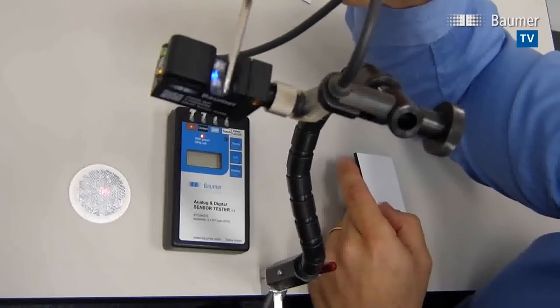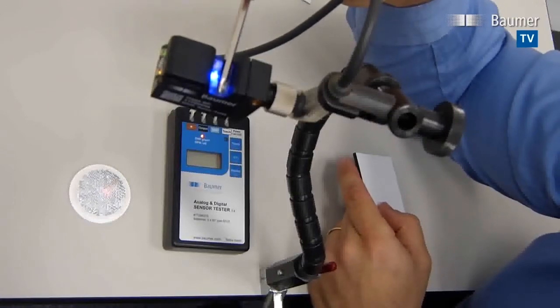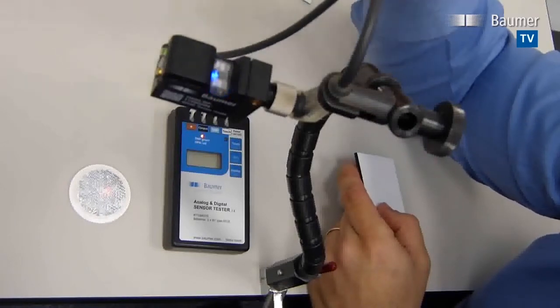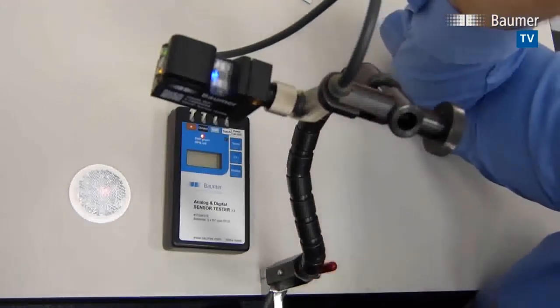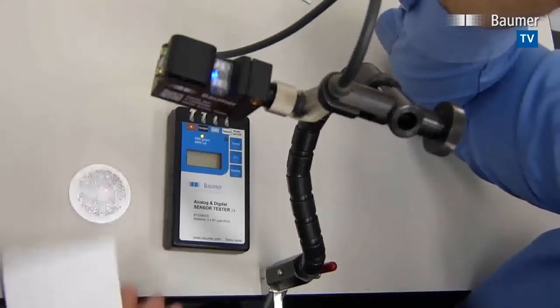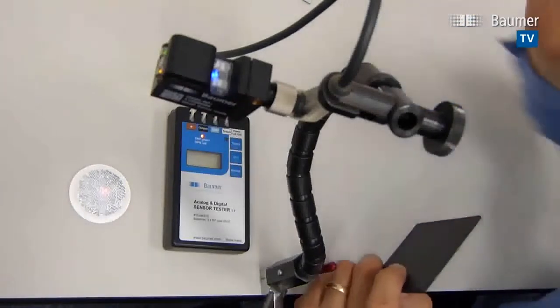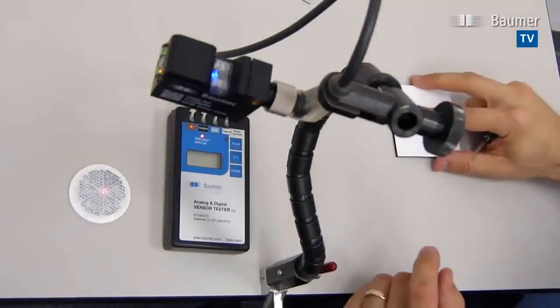In level 2 teach, this sensor has no function. That's level 2. And in level 3, it's a factory reset. That's the 0500RP pinpoint retroreflective sensor from Baumer.